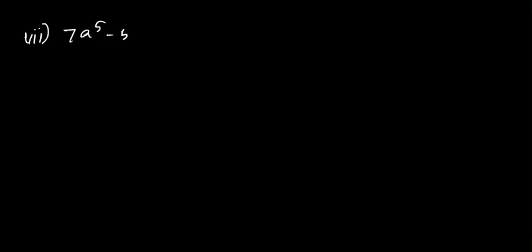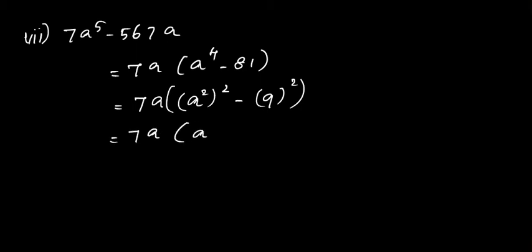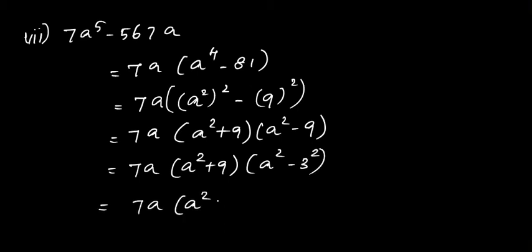Seventh question: 7a⁵ - 567a. Take 7a as common, so we get a⁴ - 81. Write 7a as it is; a⁴ can be written as (a²)² minus 9². Expanding using the formula, we get 7a(a² + 9)(a² - 9). Next, a² - 9 can be written as a² - 3², so expanding again we get 7a(a² + 9)(a + 3)(a - 3).